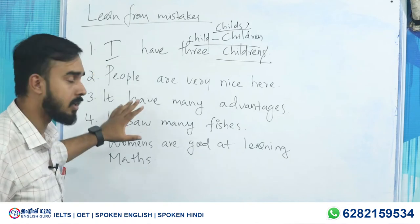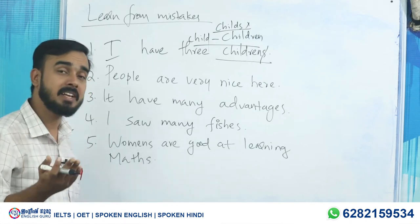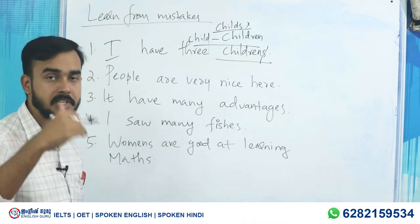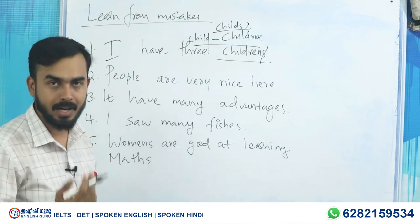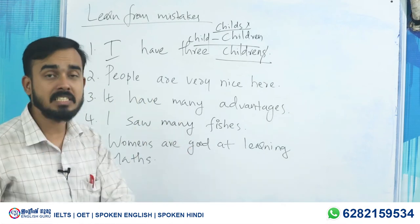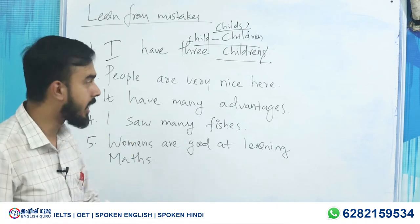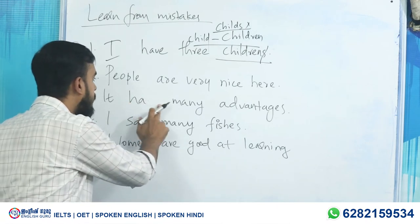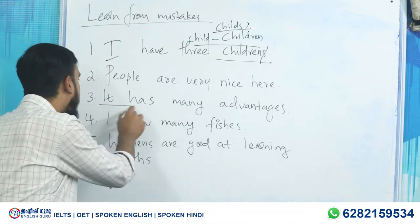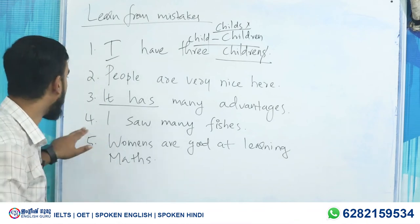Third one: 'It has many advantages.' In American English 'it have' may be heard — you might have come across videos of Donald Trump, Joe Biden, or Barack Obama using it — but in British English it is not acceptable. We have to say 'it has' — 'It has many advantages' or 'It has got many advantages.' So that is another common mistake.